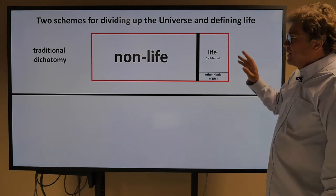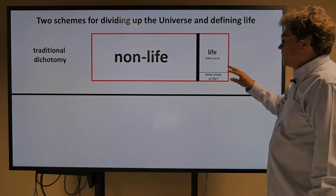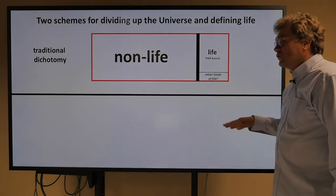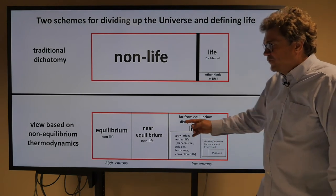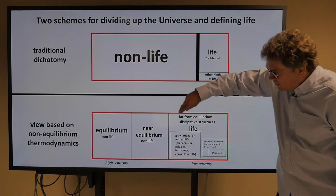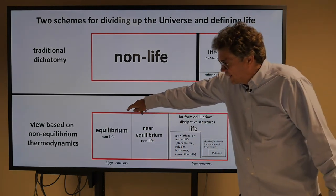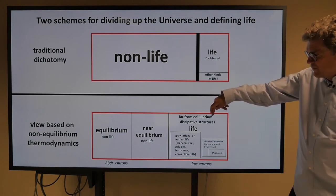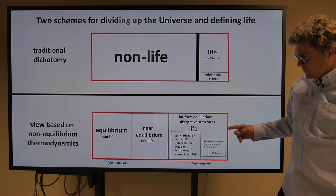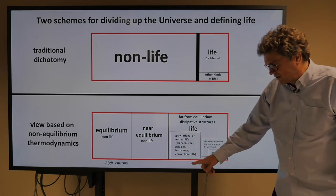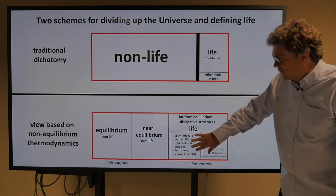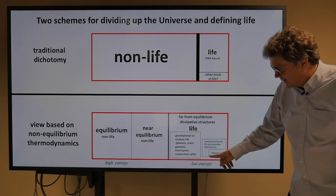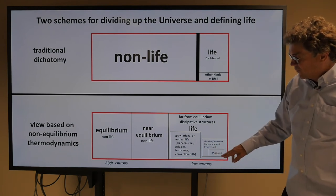Based on that idea, there's a traditional dichotomy between non-life and life. If you look at energetics and entropy, you have a view based on non-equilibrium thermodynamics: high entropy on one side, low entropy on the other. Equilibrium is non-life with the highest entropy, then near-equilibrium non-life, then far-from-equilibrium dissipative structures — which we call life. These include gravitational or nuclear life: planets, stars, galaxies, hurricanes, and convection cells. But we're more comfortable with chemical molecular life — autocatalytic, hypercycles — and then DNA-based life, which is where we are.